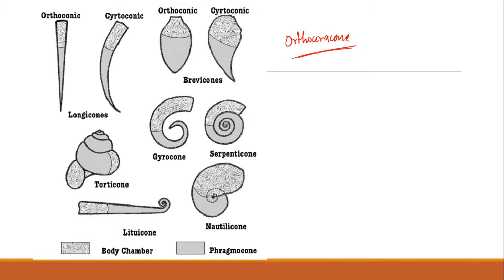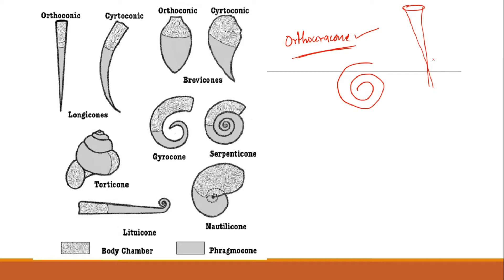In orthoceracone, the shell is straight. We have seen different types of shells — goniatites, ammonites, nautilites — which were coiled, but in orthoceracone the shells are straight, not coiled. This is an orthoconic shell — you can see there is no coiling. The dotted part is your body chamber where the animal resides, and the gray part is your phragmocone.